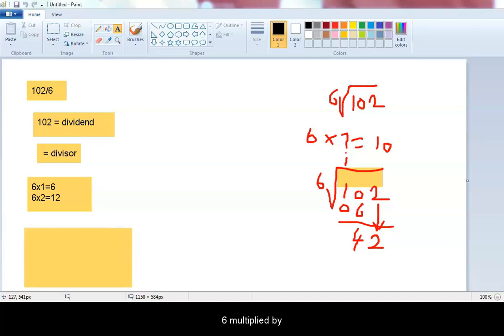6 multiplied by what gives 42? 6 multiplied by 1 equals 6. 6 multiplied by 2 equals 12. 6 multiplied by 3 equals 18.